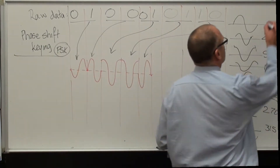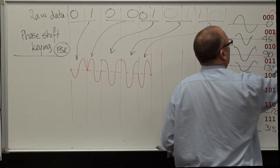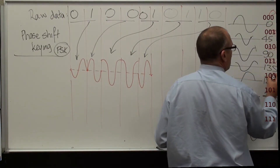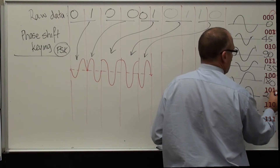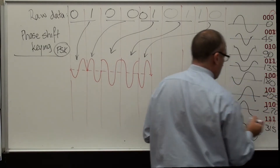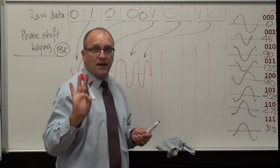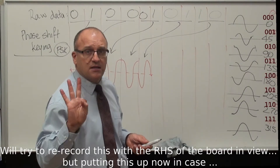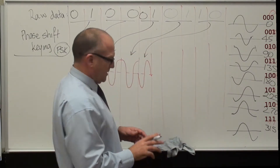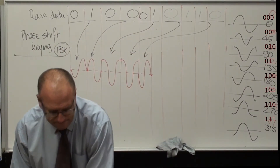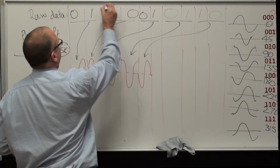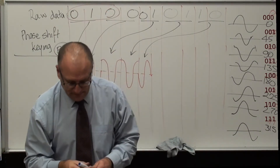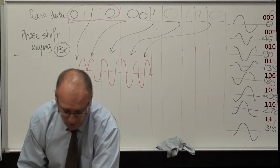0 degrees is 0, 0, 0. First group: red on the board — 000.